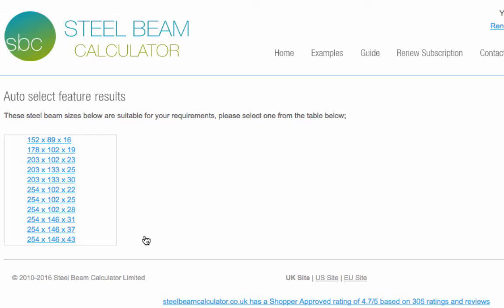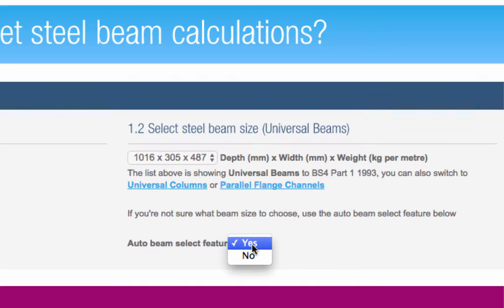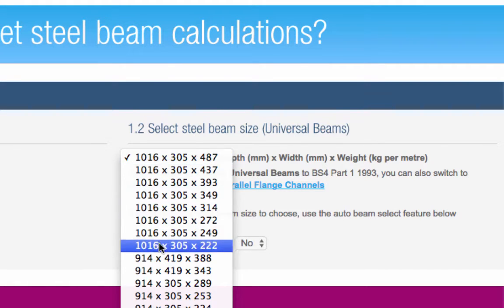However, if you know your beam size and want to specify that now, set the Auto Beam Select feature dropdown to No, and find your beam dimensions in the relevant dropdown menu.